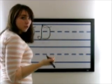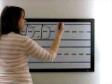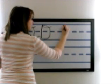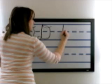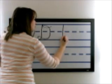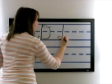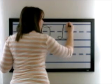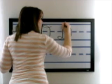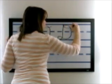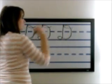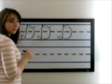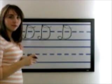One more time. Start at the top of the page, come down, make a small loop, loop back up to the top of the page, make a small loop down. There you go — that's your capital letter D.